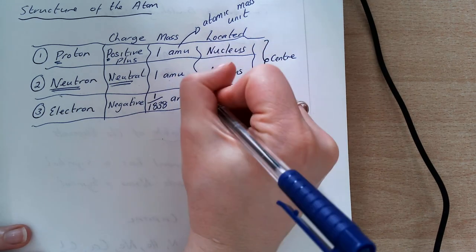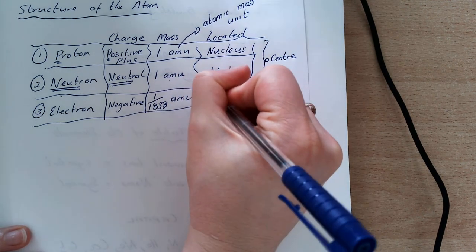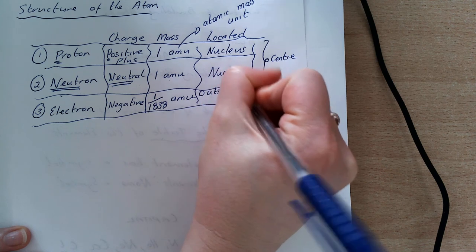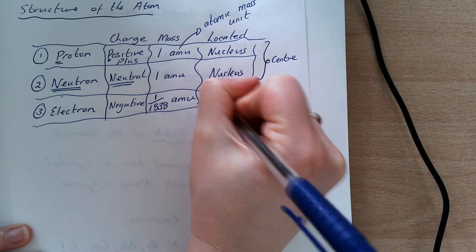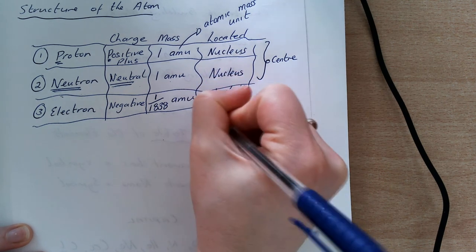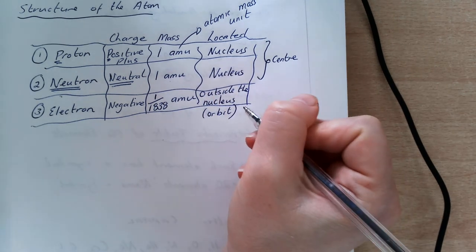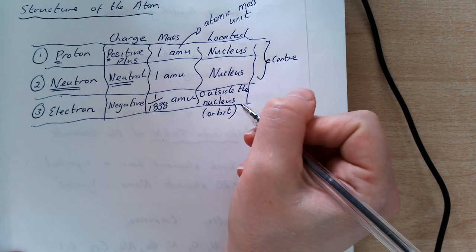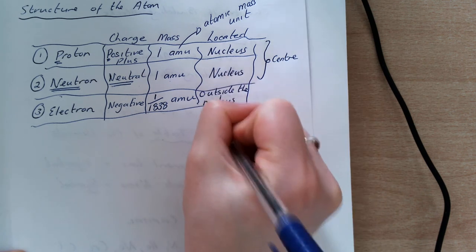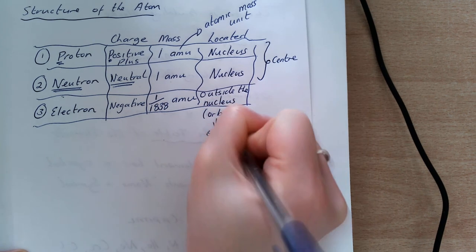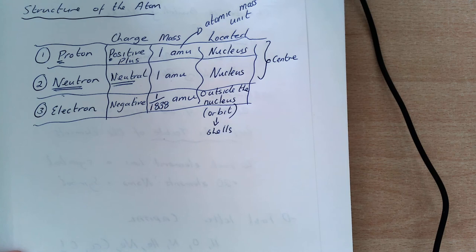My electrons, though, are different because they are outside the nucleus. They orbit it. So much like the way our planets orbit the sun, my electrons orbit this nucleus. And they are located in what we call shells.